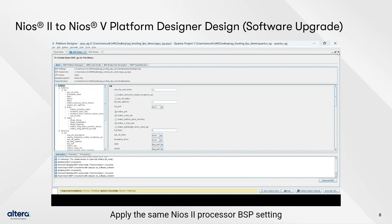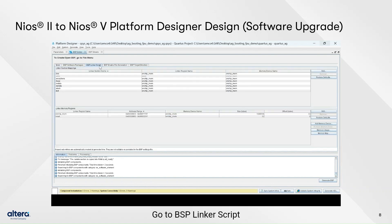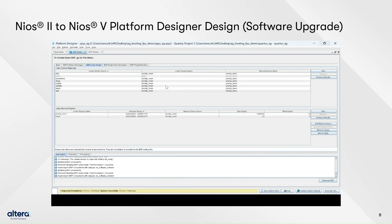Apply the same settings from the Neos 2 BSP into the new Neos 5 BSP. Go to the BSP linker script, select the memory region to on-chip memory, then click Generate BSP.